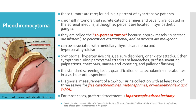These tumors can be associated with medullary thyroid carcinoma and hyperparathyroidism. The symptoms include hypertensive crisis, seizure disorders, or anxiety attacks. Other symptoms during paroxysmal attacks are headaches, profuse sweating, palpitations, chest pain, nausea and vomiting, and pallor or flushing. The standard screening test is quantification of catecholamine metabolites in a 24-hour urine specimen. The diagnosis is by measurement of a 24-hour urine collection with at least 2 of 3 assays for free catecholamines, metanephrines, or vanillylmandelic acid (VMA). For most cases, preferred treatment is laparoscopic adrenalectomy.